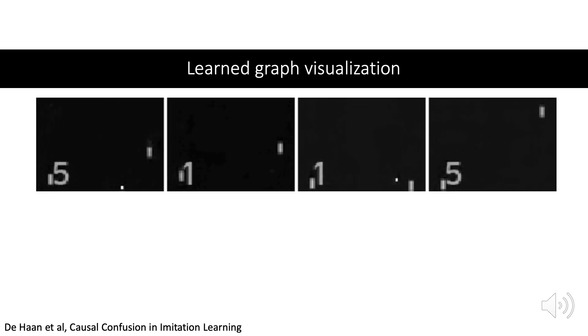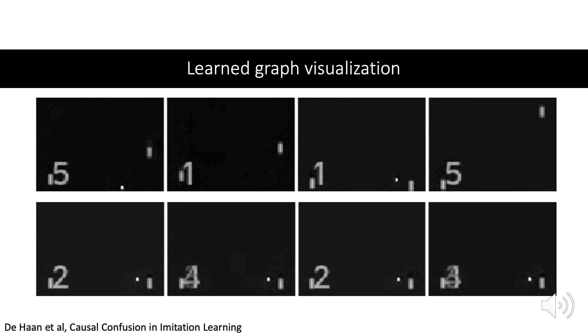We can visualize a causal graph in the following way. We encode an Atari pong state with a VAE, and resample from the prior all latent dimensions corresponding to a nuisance variable. Then we decode the latent into an image. For a random graph on top, we see that all aspects of the state can vary. On the bottom, we show a learned graph, with the nuisance variables resampled. We see that only the nuisance digit is affected, while the causal variables, the ball and paddles, remain the same. This indicates a good causal graph is learned by intervention.